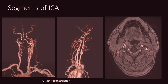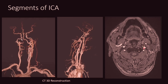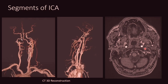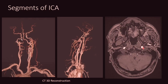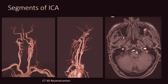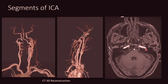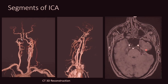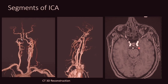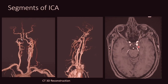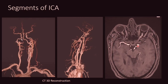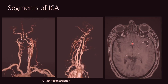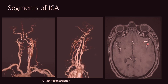Here is an MRA TOF video showing both the internal carotid arteries ascending as the C1 or cervical segment, then into the carotid canal as the petrous segment, ascending into the foramen lacerum as the lacerum segment, going anteriorly and taking a loop around the anterior clinoid process, and finally terminating into the anterior cerebral artery anteriorly and the middle cerebral artery laterally.